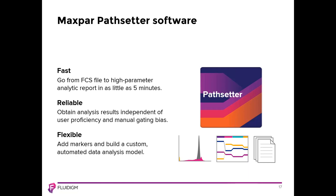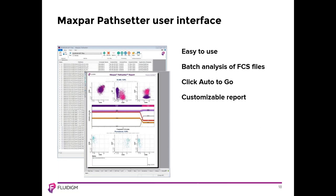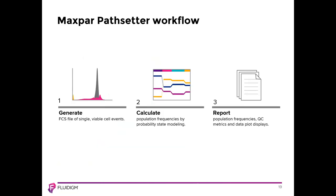Pathsetter provides analysis results independent of user proficiency and manual gating bias. It is also flexible, allowing you to build a custom automated data analysis model if you want to add antibodies to the Maxpar Direct Immune Profiling Assay. Maxpar Pathsetter provides an easy-to-use interface where multiple FCS files can be loaded and analyzed as a batch. Simply click Auto to have Pathsetter automatically run data cleanup and analyze your files — a few minutes later, the report will be ready to explore and export. In Step 1, Pathsetter generates an FCS file of single viable cell events. In Step 2, population frequencies are calculated by probability state modeling. In Step 3, the report is generated, including population frequencies and QC metrics.